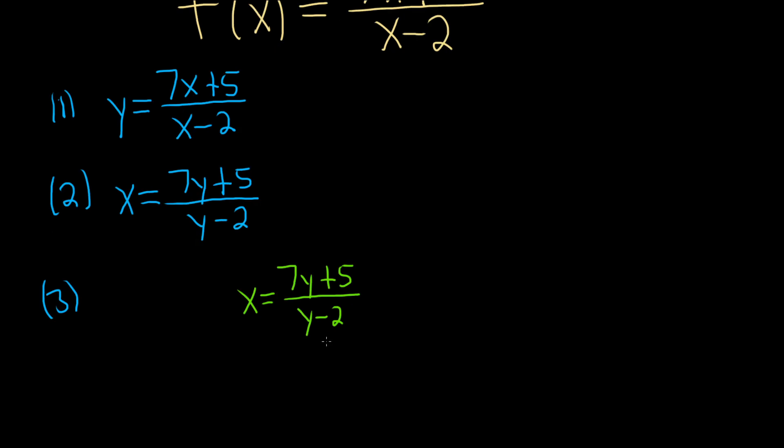Okay, so we're looking for y. And we have y's in the numerator and the denominator. So maybe a good first step would be to clear the fractions. We can do that by multiplying both sides by y minus 2.